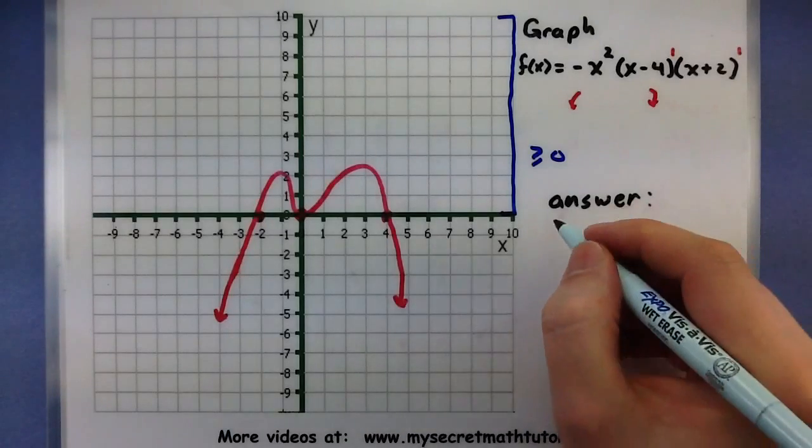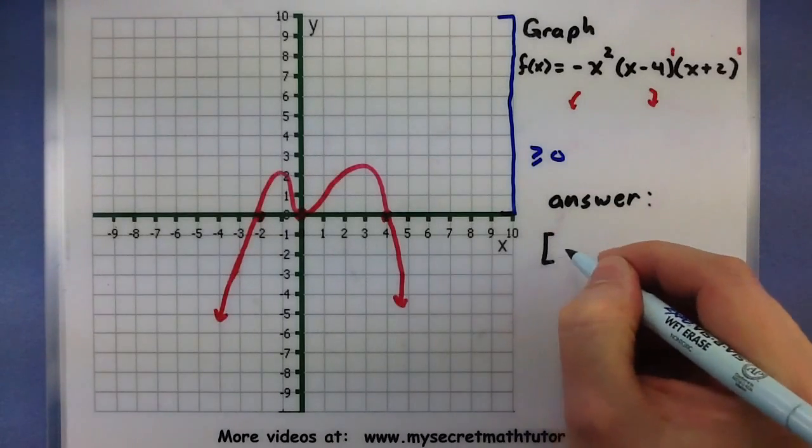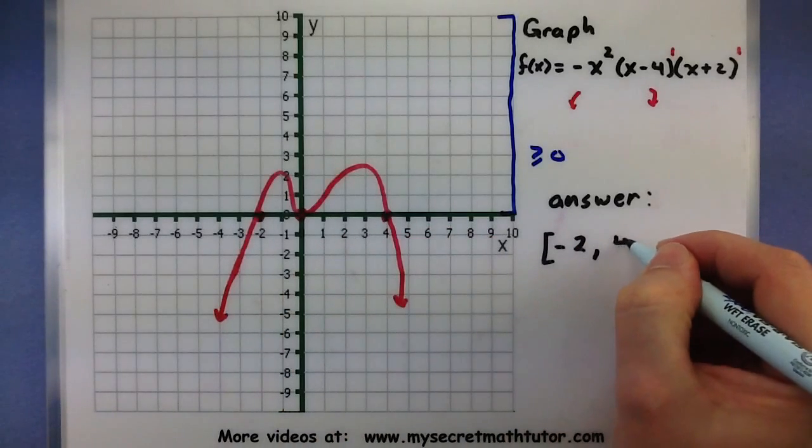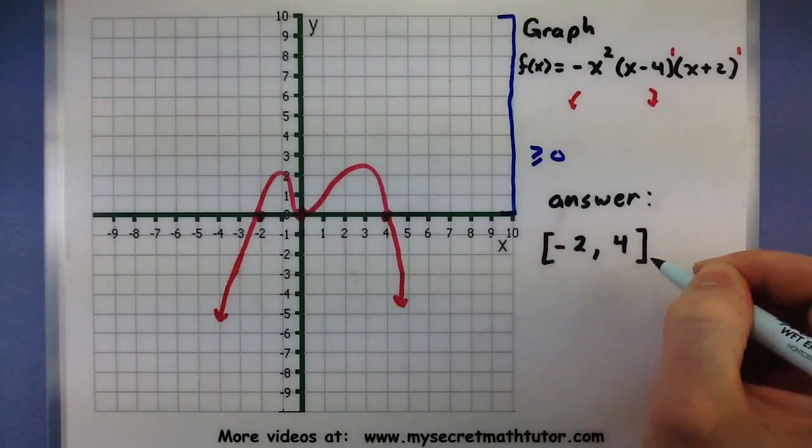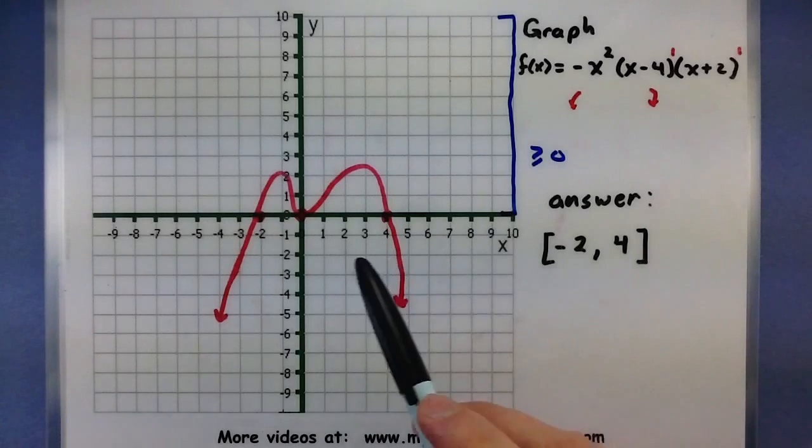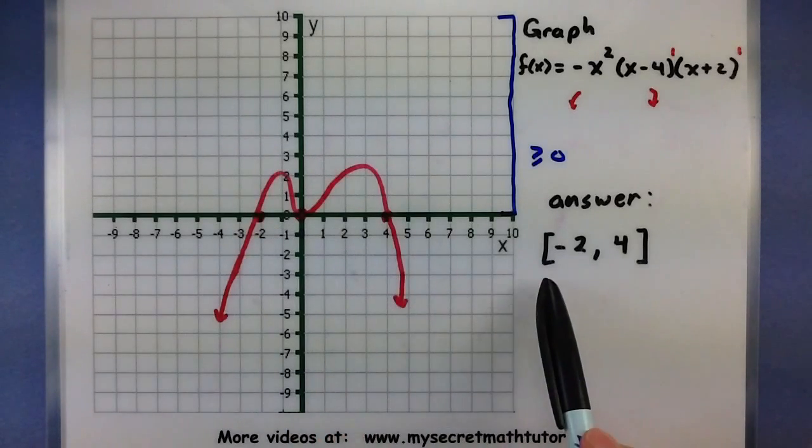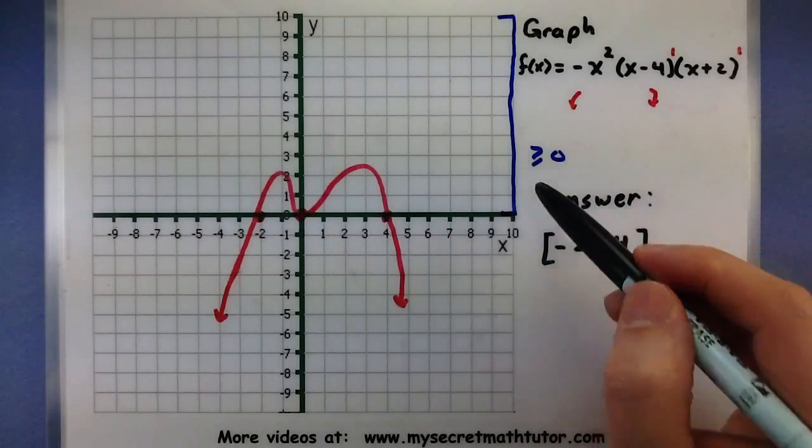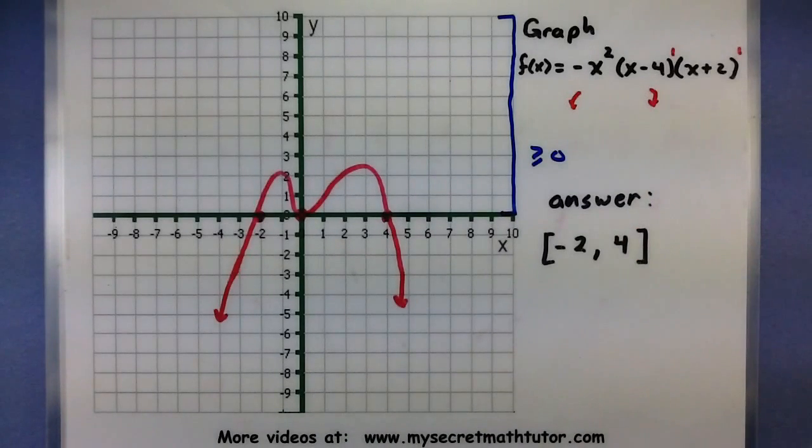So let's go ahead and write this interval. So from negative 2 all the way up to 4, the polynomial is greater than or equal to 0. Now, note in this case that we're including these places where it crosses the x-axis, the negative 2 and the 4, and especially that 0, because it says greater than or equal to 0. Alright.